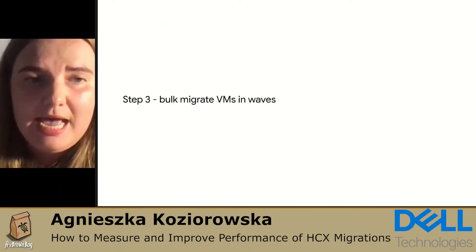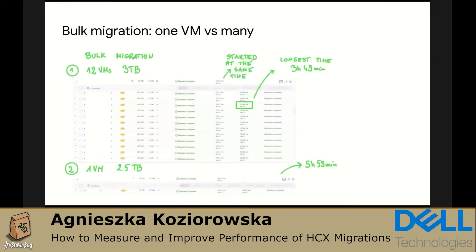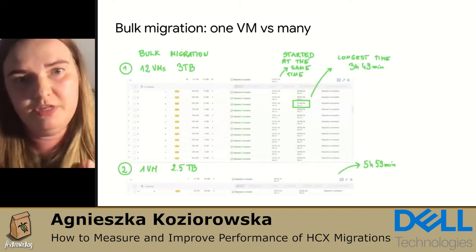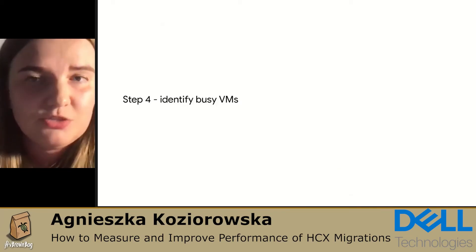When I started working with migrations, I thought it might be better to migrate one VM rather than a wave of VMs. But after running many tests with customers, I found you shouldn't be afraid of migrating many VMs at the same time. In example one, I migrated 12 VMs — three terabytes each — using bulk migration. They all started simultaneously and the longest migration time was 3 hours 49 minutes. Comparing under the same conditions, a single 2.5 terabyte VM took almost six hours. Of course it depends on the VM's traffic, but migrating many VMs concurrently really does produce great results.